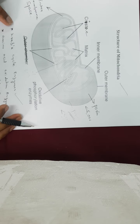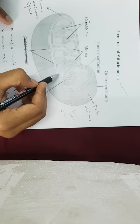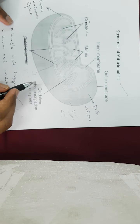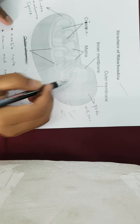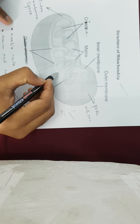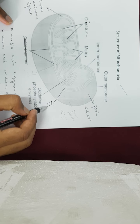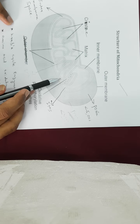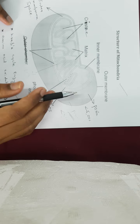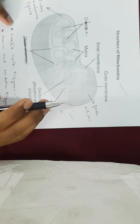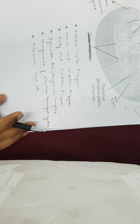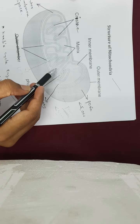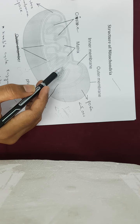Very importantly, all the components of the electron transport chain are present on the inner mitochondrial membrane, making the inner mitochondrial membrane the site of the electron transport chain. The space between the inner membrane and the outer membrane is called the intermembrane space. Apart from that, the mitochondria also has its own genetic material and ribosomes, and some of the mitochondrial enzymes are synthesized by the mitochondria's own genetic material.